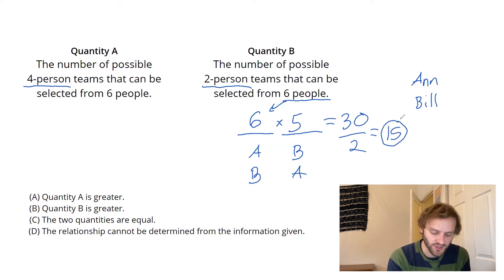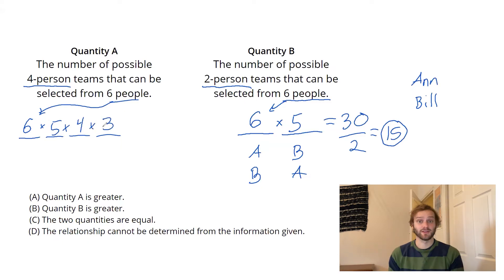I'm going to go take the same logic to quantity A, but this time I need four slots, because I'm going to pick four people for the team. Same deal. I have six options for my first player. I branch into my five options for my second player. I have four people left for my third player, and then three for my last player on the team.